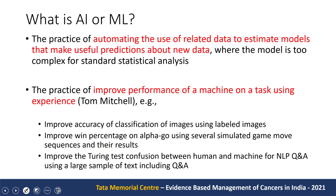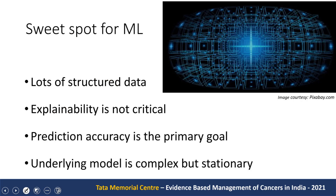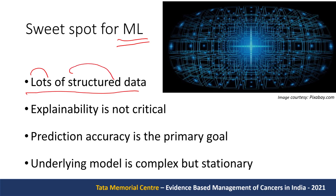What is AI or ML? Basically, it is about automating the use of related data to estimate models that make useful predictions, and the model should improve given more data. Machine learning — a more technically correct term for AI — works well when we have lots of structured data. It doesn't work well with unstructured data or fewer data. The models it learns are usually very complicated.